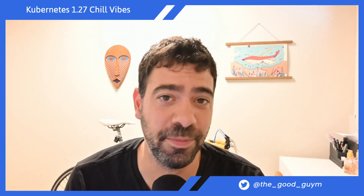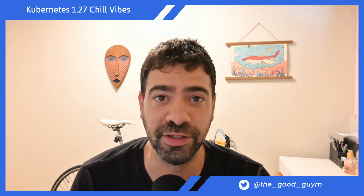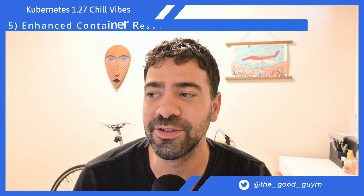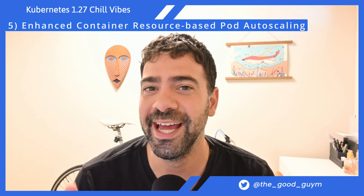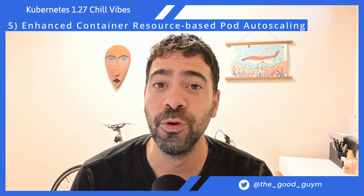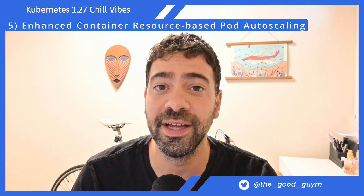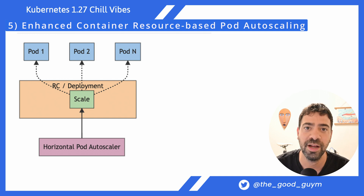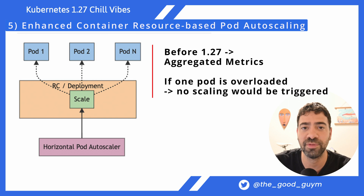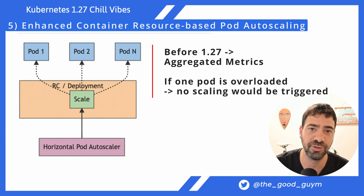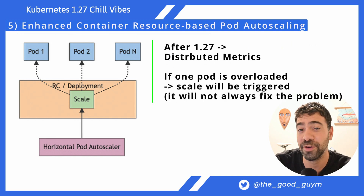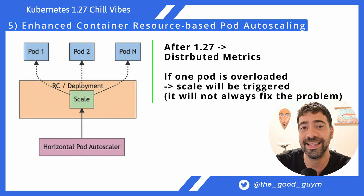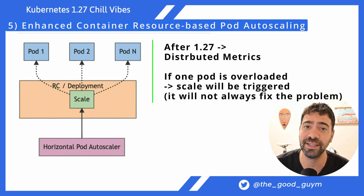The next capability is called enhanced container resource-based pod autoscaling. It has a complex name but is simple to understand: HPA will now follow every specific pod's resources individually. Previously, HPA calculated metrics across all pods together and triggered based on that aggregate. Now, even if just one pod is experiencing increased load, HPA will trigger a scale-up to address that situation.